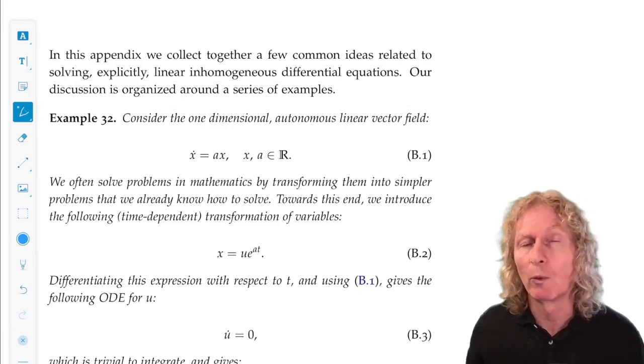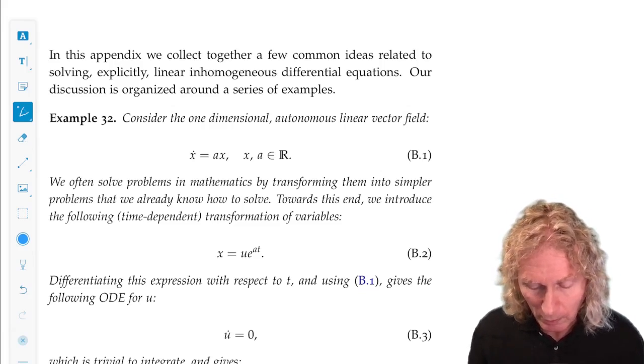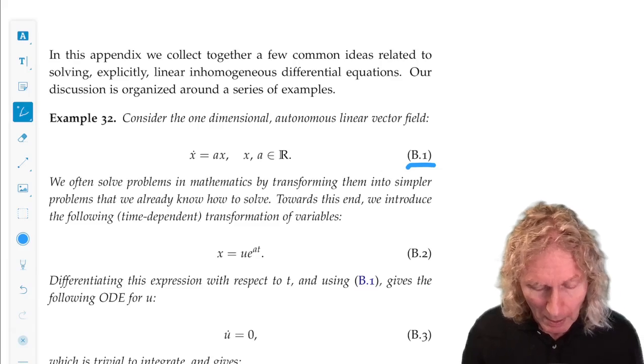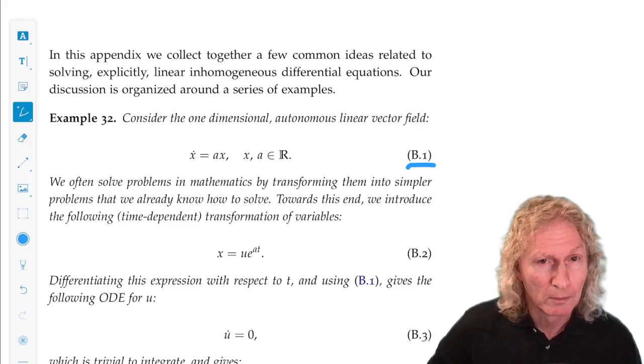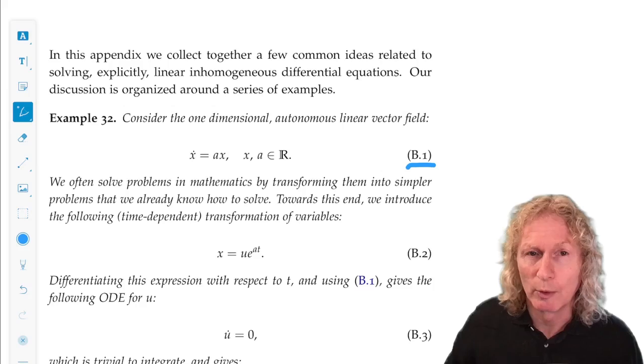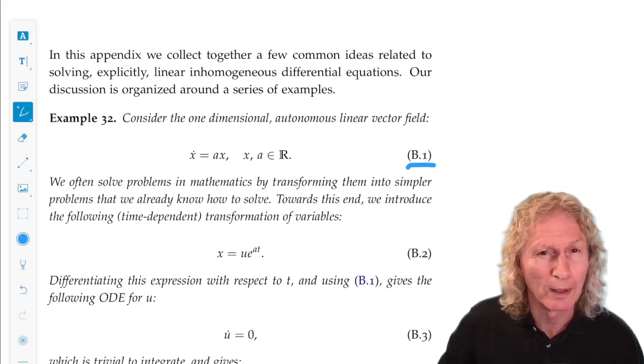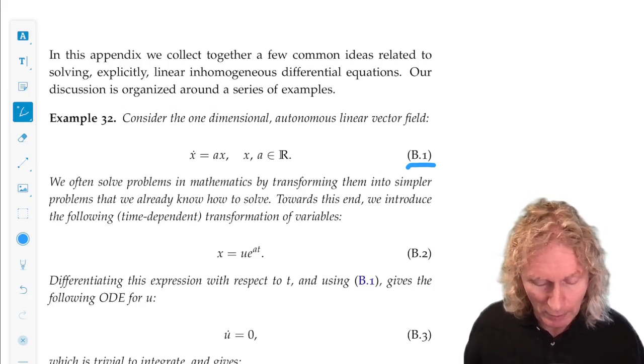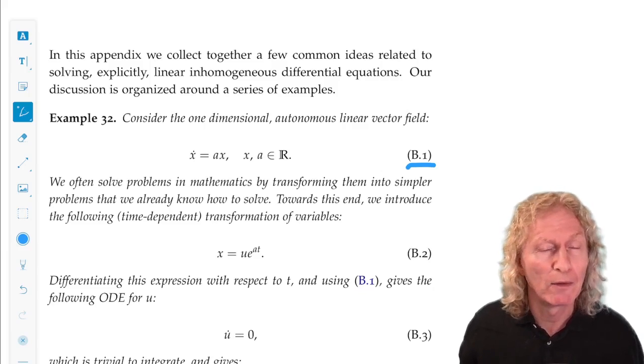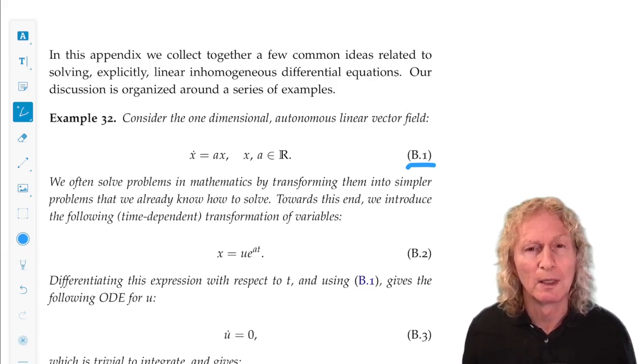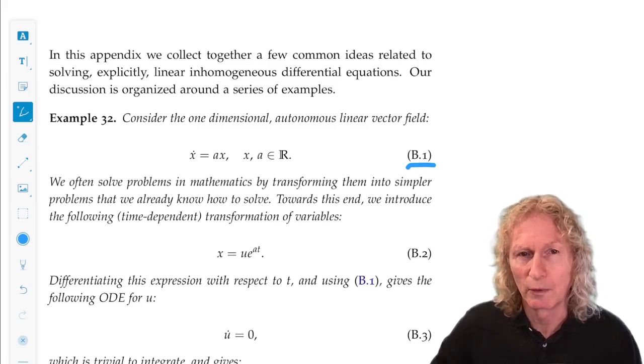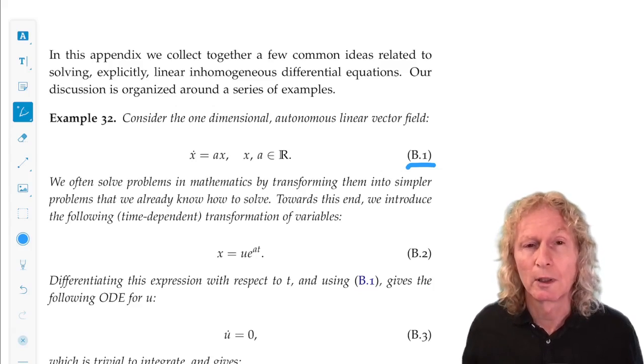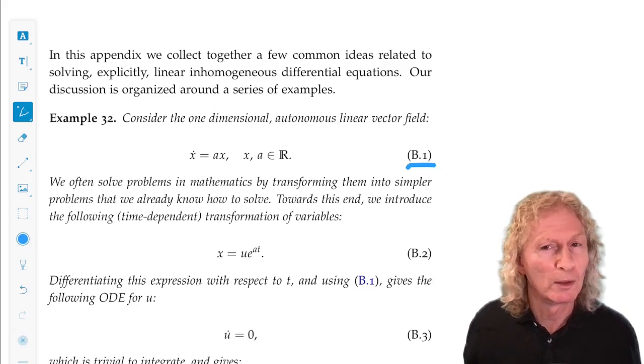And we're going to see, so we start off with the one-dimensional simple linear ODE, X dot equals AX where A is just a constant. And then we're going to add a term to it, make it inhomogeneous or forcing, X dot equals AX plus some function of time. And then we're going to let A vary in time. We're going to see that the same method is used each time for solving it. And then we're going to go to higher dimensions and see where things break down.